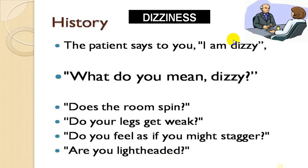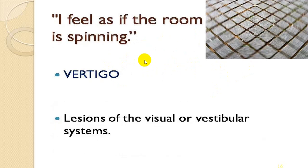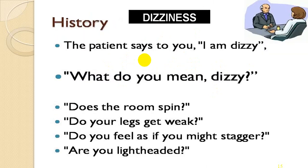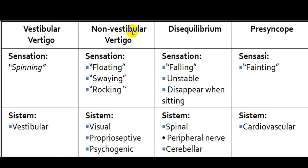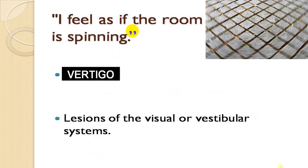When a patient says 'I'm dizzy,' first ask: 'What do you mean by dizzy? Does the room spin?' If a person has a spinning feeling, it is more in favor of vertigo. If legs get weak, more in favor of ataxia. If they feel they might stagger, more in favor of presyncope. If saying light-headedness, more in favor of psychogenic groups. If the room is spinning or something is spinning around them, more in favor of vertigo.